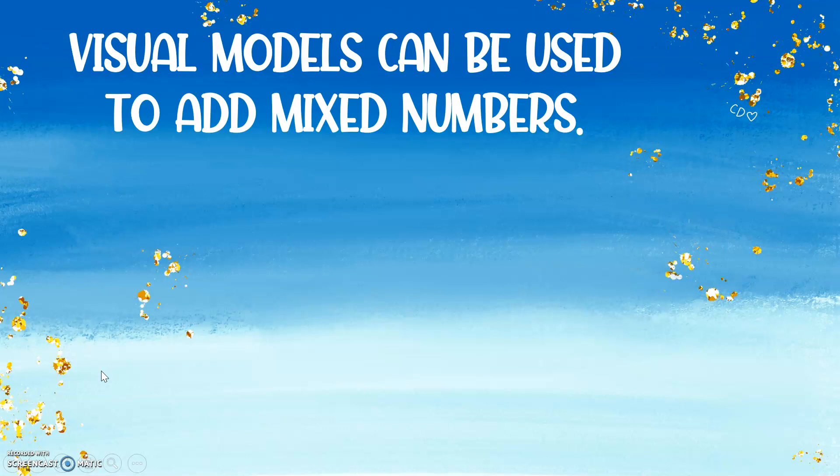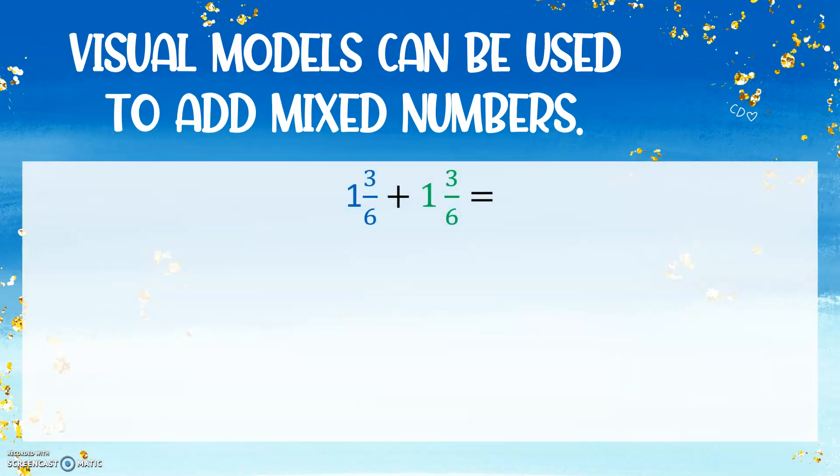Visual models can be used to add mixed numbers. For example, we have two mixed numbers, 1 and 3 sixths plus 1 and 3 sixths. So the first thing I would do to represent my first addend of 1 and 3 sixths is I'm going to create one whole.